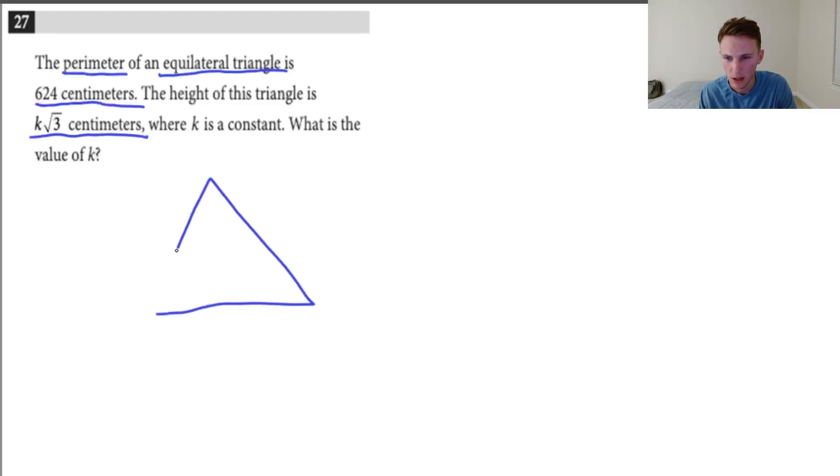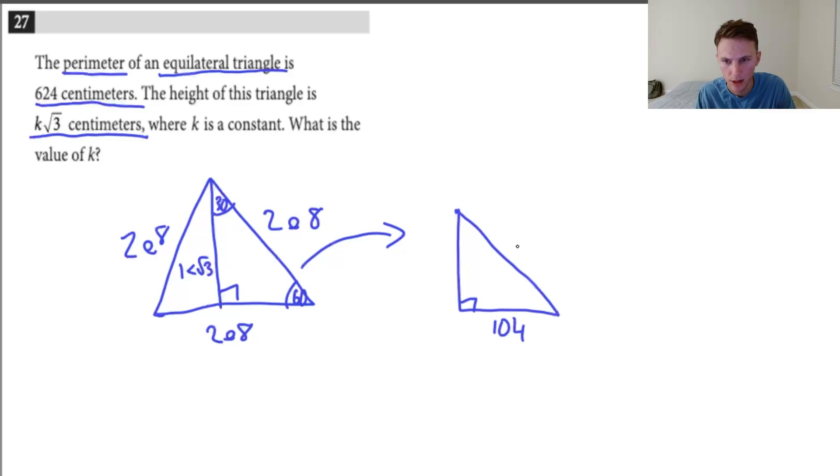So this is an equilateral triangle. Let's draw it out. All the sides are going to be the same. They're going to be 208 because we divide 624 by 3. So this will be 208, 208, and 208. And we're told that the triangle has a height of k square root of 3 and we're asked to find k. So we know that it's equilateral. So all the angles are going to be 60. So this will be 60. This will be 30. And this is 90, obviously. So let's redraw the triangle, the smaller one because we're splitting it in half. So basically we have 104 because we split it in half, 208 and then k root 3. And then this is 60 degrees and this is 30. So you should recognize now that this is a 30, 60, 90 special right triangle.